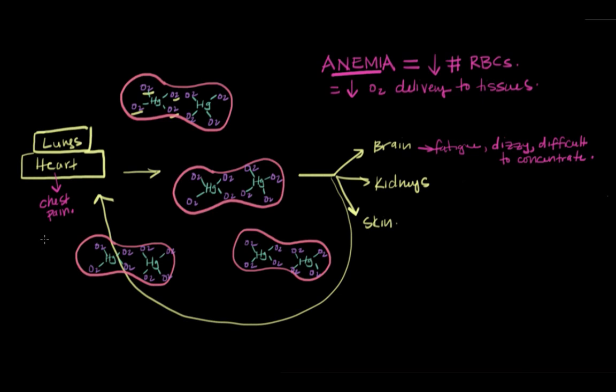Another thing that happens is when there aren't enough red blood cells, the skin starts to appear pale—that's called pallor. When the skin kind of loses its color, that's called pallor.